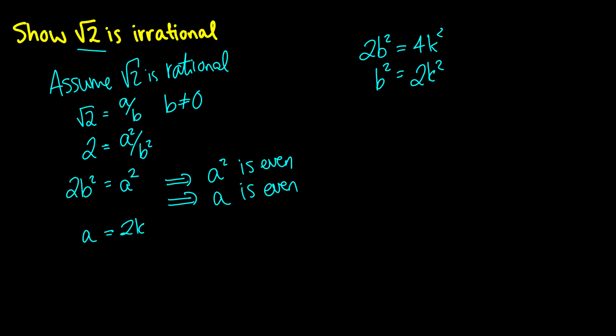Oh look, this is the same situation we had over here, except now we have different variables. So what can we conclude from this? Well, that means that b² is even, which means that b is even. So we've done a lot of this. We know a is even, and we know b is even.